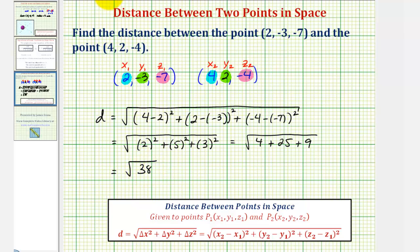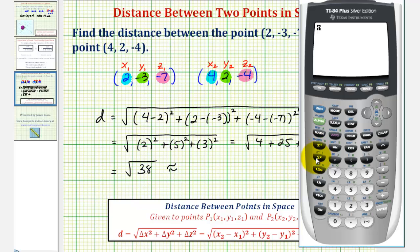And since the square root of 38 does not have any perfect square factors, this does not simplify, but let's also get our decimal approximation. The square root of 38 is approximately 6.16.